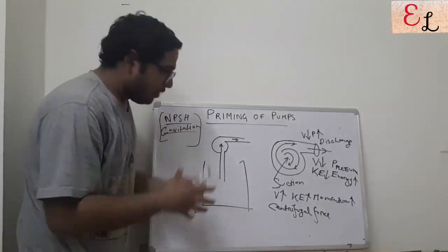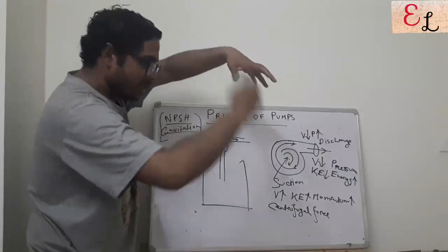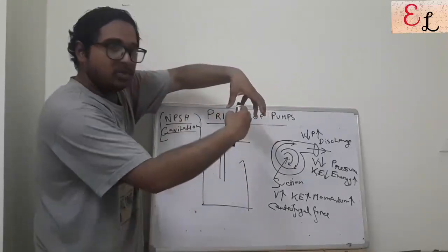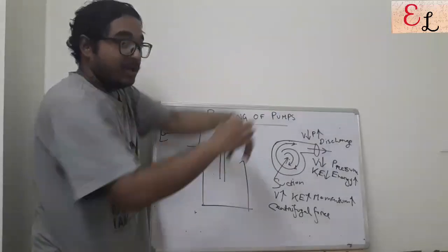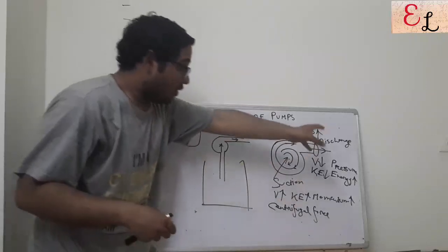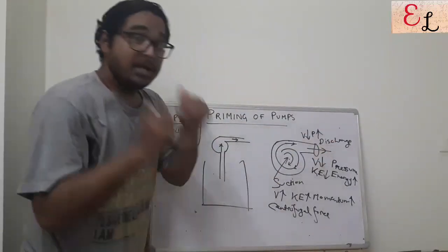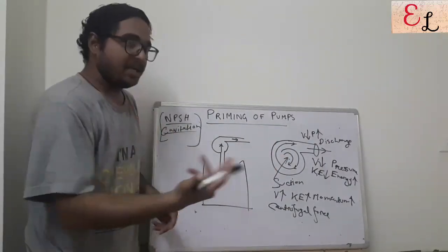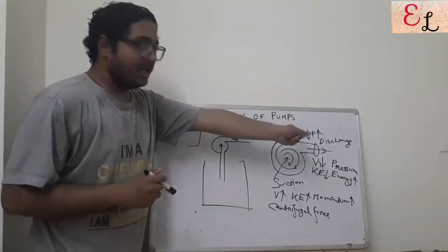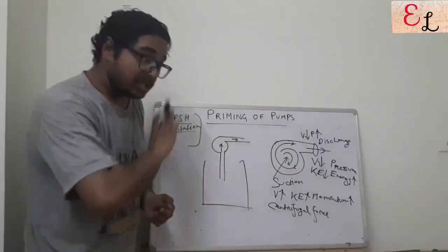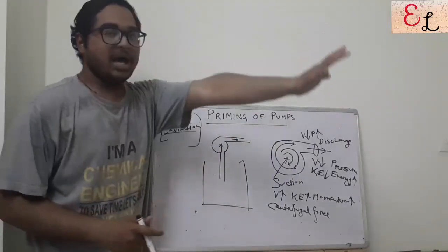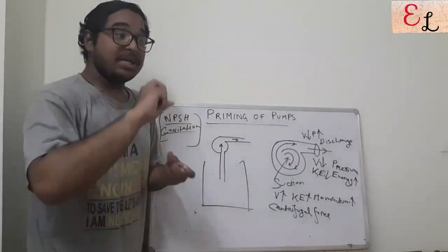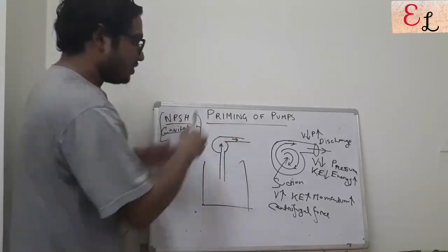So this is a simple explanation: the impeller rotates, creating a suction force. Liquid comes into the suction and is thrown to the periphery with a high amount of velocity and high kinetic energy. When it reaches the periphery the velocity decreases, kinetic energy decreases, and this is converted into pressure energy — the pressure head increases. So the discharge is at high pressure from low pressure. This is what the activity of a pump is, and this is how a centrifugal pump works.